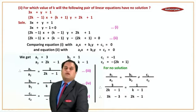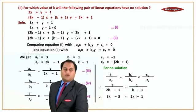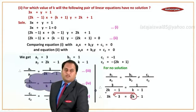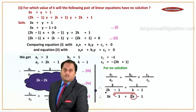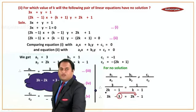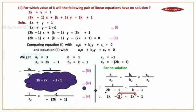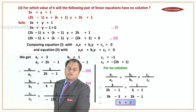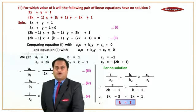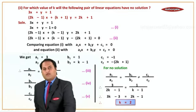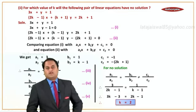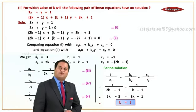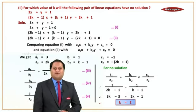So we get 3k minus 3 equals 2k minus 1. Grouping k terms and constants: 3k minus 2k equals k, and minus 1 plus 3 equals 2. Therefore k equals 2. The answer is: the value of k is equal to 2.